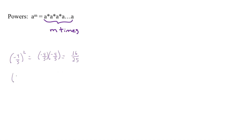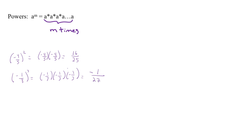Now say we had negative one over three to the third power. That's just going to be negative one over three times negative one over three times negative one over three. Those first two give a positive, but then we still have that last negative, so it's going to be negative. One times one times one is one. Three times three is nine, times three is 27. So our answer is negative one over 27.